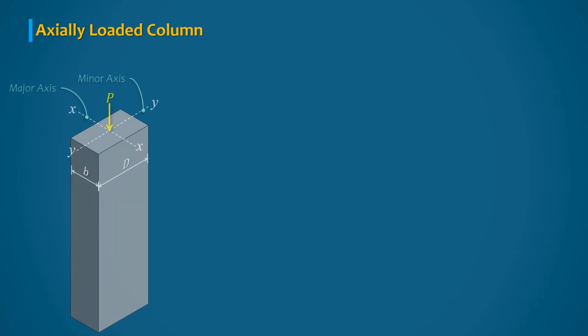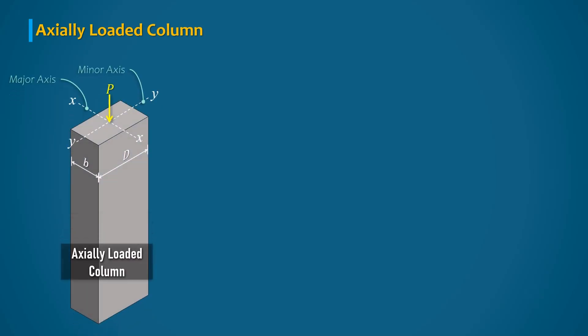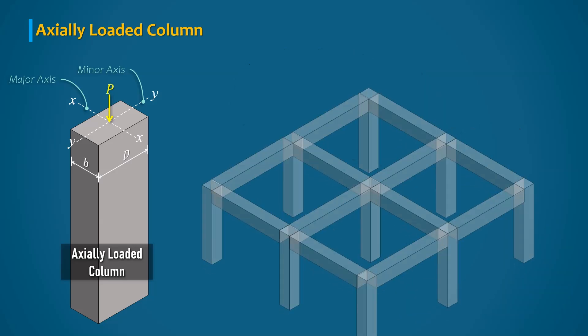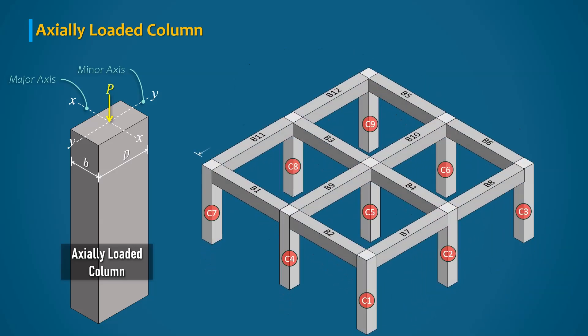Let us start with the first type that is axially loaded columns. This type of columns are relatively rare. The question is when we are finding this type of column in building frame. Let us try to find the answer by considering a symmetrical building frame subjected to uniformly distributed load of same intensity.